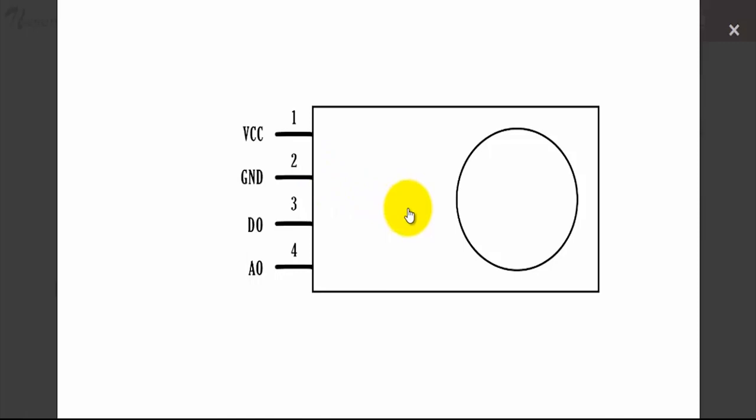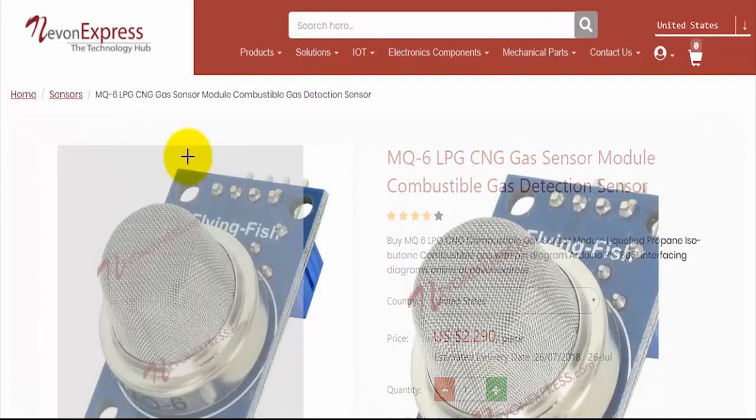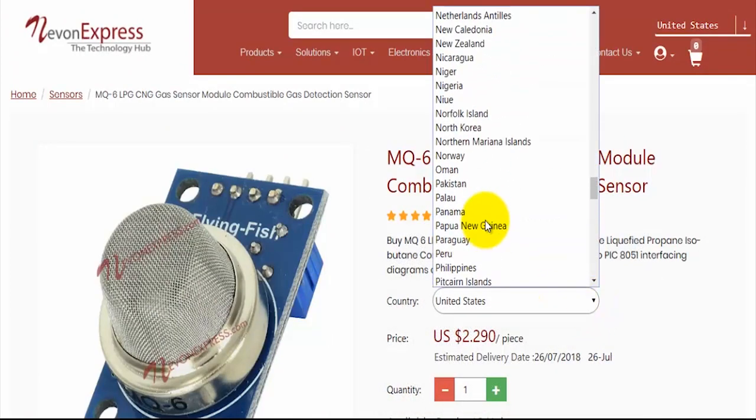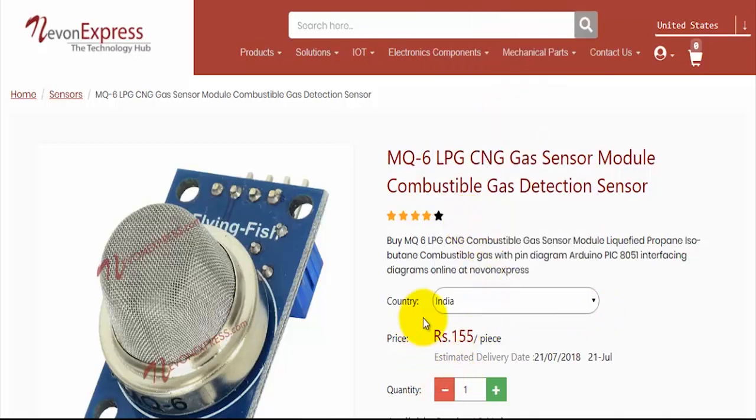Before going further, I would like to answer a small query. What's the price of MQ6 sensor and where to buy it? So you can simply go on to nevonexpress.com. You can see the sensor is available over here. Now simply select your country and you can get its price.